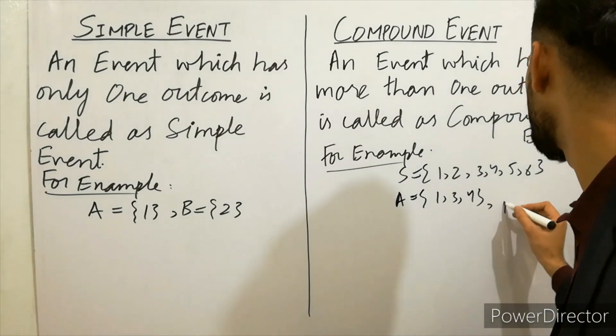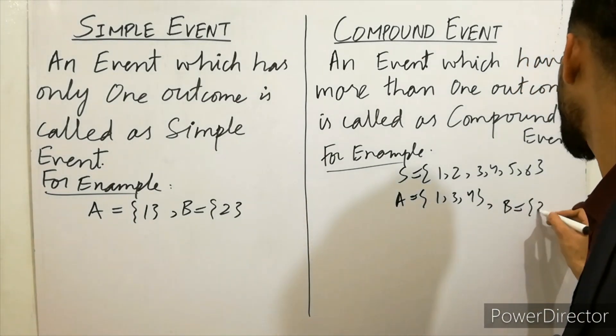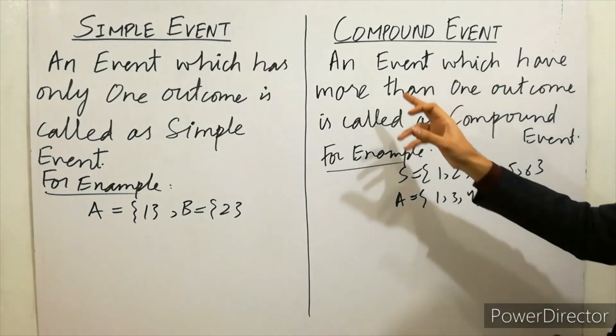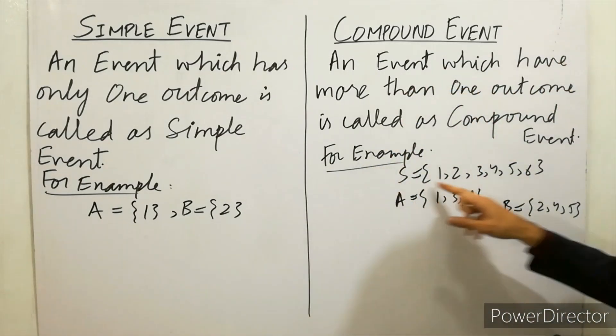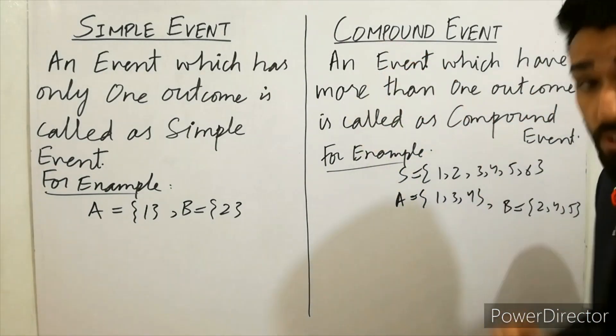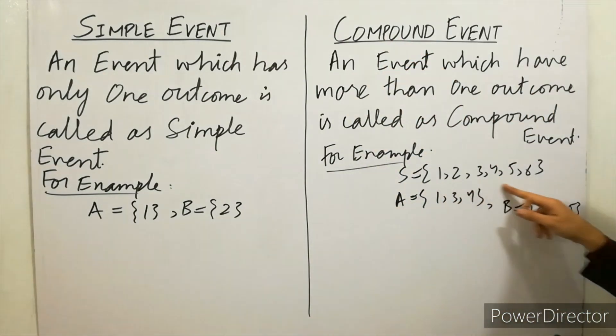B is equal to 2, 4, 5. So must remember that which has more than one outcome. That's a sample space and also called as compound event because it has more than one outcome.